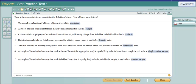Data that can take on only finitely many or countably infinitely many values is said to be discrete data. Data that can take on infinitely many values such as all the values within an interval of real numbers is said to be continuous data.